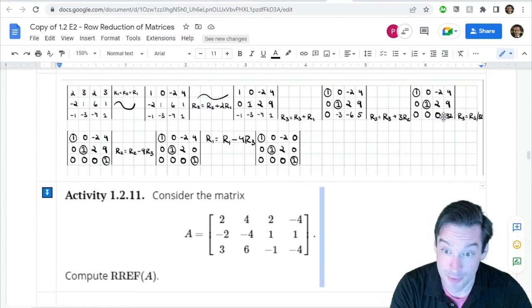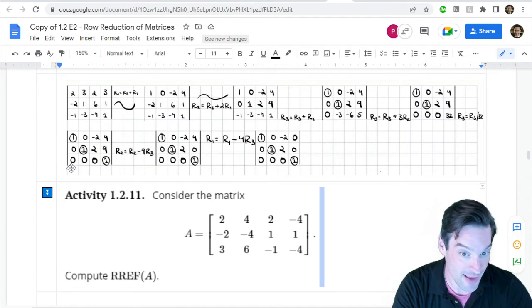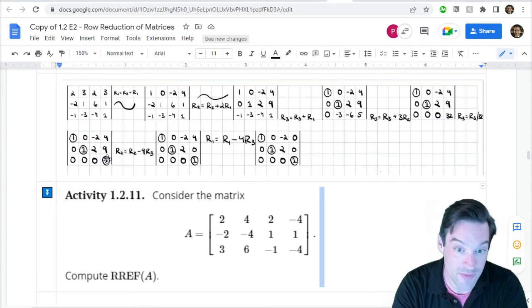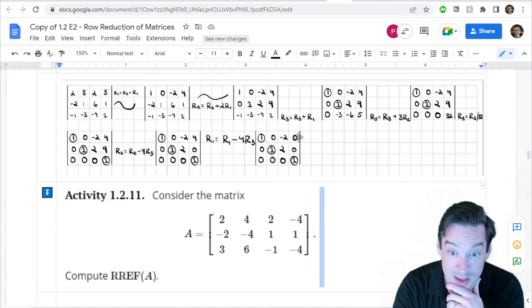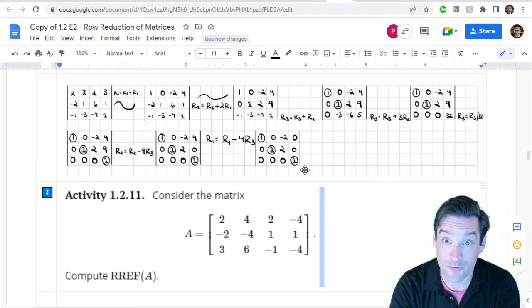But this happens to be an example where we can because it's the only non-zero entry on its row. So if we divide by 32, it just turns into a one with nothing else untoward happening in the process. That makes that entry into a pivot. And then we use that pivot to hammer out the other entries that are above it.